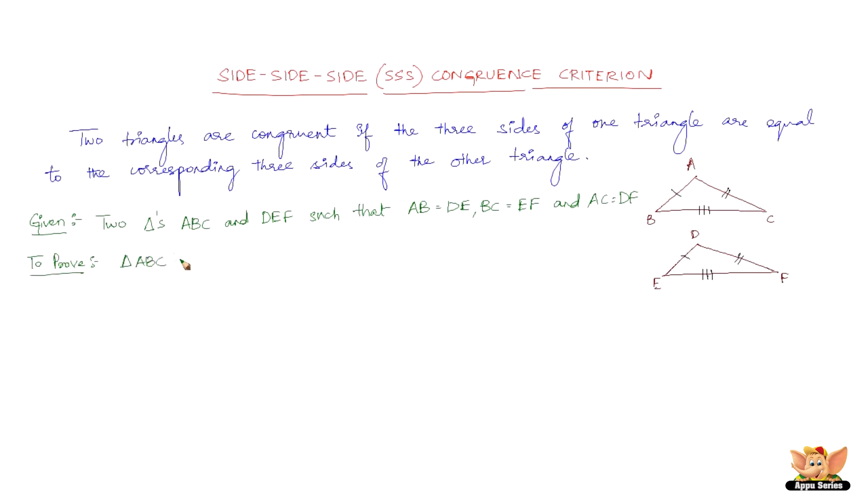What we have to prove here is, let us see how do we prove this. We have got a construction to make. What is this construction? Now suppose BC is the longest side, draw EG such that angle FEG is equal to angle ABC and EG equals AB. Now join GF and join GD, here it is. So this is the construction.